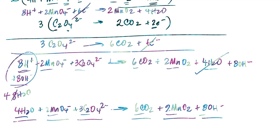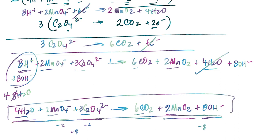Checking the final equation: 8 hydrogens each side; 2 manganese; 6 carbons. Oxygens: left side 4 + 8 + 12 = 24; right side 12 + 4 + 8 = 24. Balanced by mass. For charge: left side −2 + (−6) = −8; right side 8 × (−1) = −8. Balanced by charge as well. This is the final balanced redox equation under basic conditions.